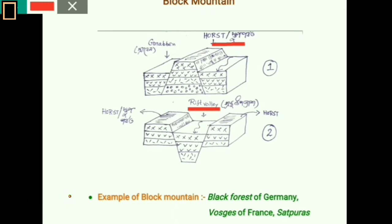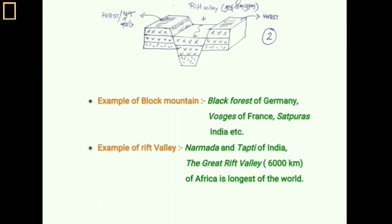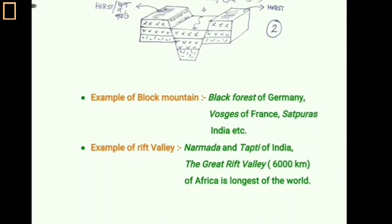Block mountains are steep-sided and flat-topped because crustal blocks are uplifted vertically, so they lack lofty mountain peaks. They do not extend over large areas like other mountains. Block mountains are always associated with landforms like the graben and rift valley. Important examples include the Black Forest of Germany, the Vosges of France, and the Satpuras of India. The Narmada and Tapti are important rift valley examples in India, and the Great Rift Valley in Africa, 6,000 km in length, is the longest rift valley in the world.